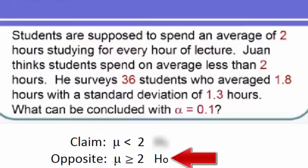And finally, the fourth step is to identify the alternative, H subscript 1, which in this case is the claim.